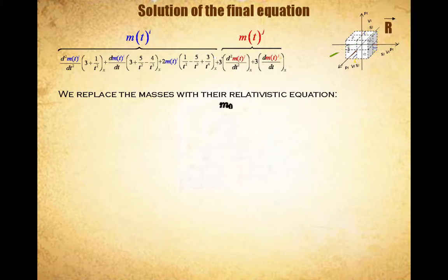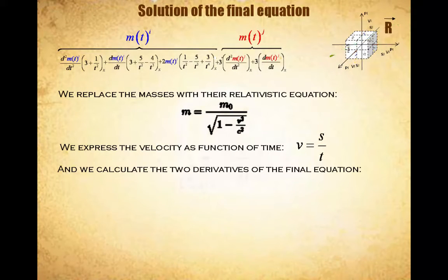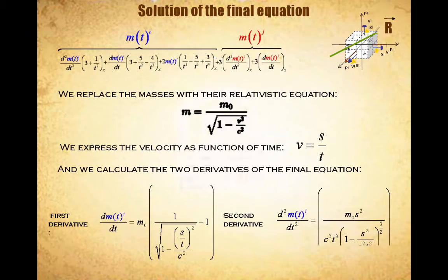First we replace the masses with their relativistic equation, then we express their speed as a function of time t. And finally we calculate the value of the two derivatives of the final equation, the first derivative and the second derivative.